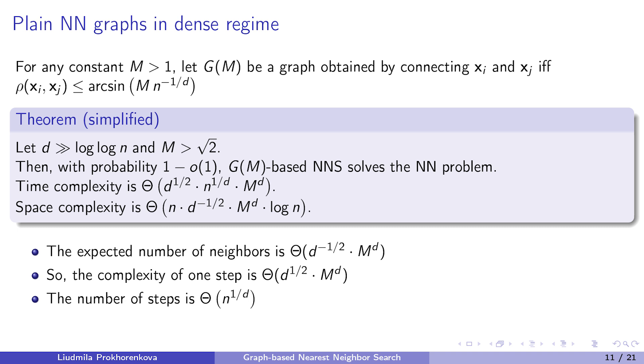Let me discuss the nearest neighbor graphs in the dense regime. We assume that each element is connected to its nearest neighbors and the size of the neighborhood is defined by some constant m. If this constant is greater than the square root of 2, then the exact nearest neighbor search based on this graph succeeds with high probability. The number of neighbors of each element is defined by the constant m and grows as m to the power of d. The number of neighbors defines the space complexity and the complexity of one step of the algorithm. To get the final time complexity, we have to multiply the complexity of one step by the number of steps. And the number of steps grows as n to the power of 1 over d. If the dimension is sufficiently small, then the number of steps is larger than the complexity of one step. In this case, it is reasonable to reduce the number of steps using long edges.